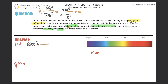So 6800 angstroms divided by 10 to the 10th gives us 6.8 times 10 to the negative 7th meters. And converting to nanometers, we multiply by 10 to the 9th, which gives us 680 nanometers. Those are the two wavelength forms for red — in meters and in nanometers.